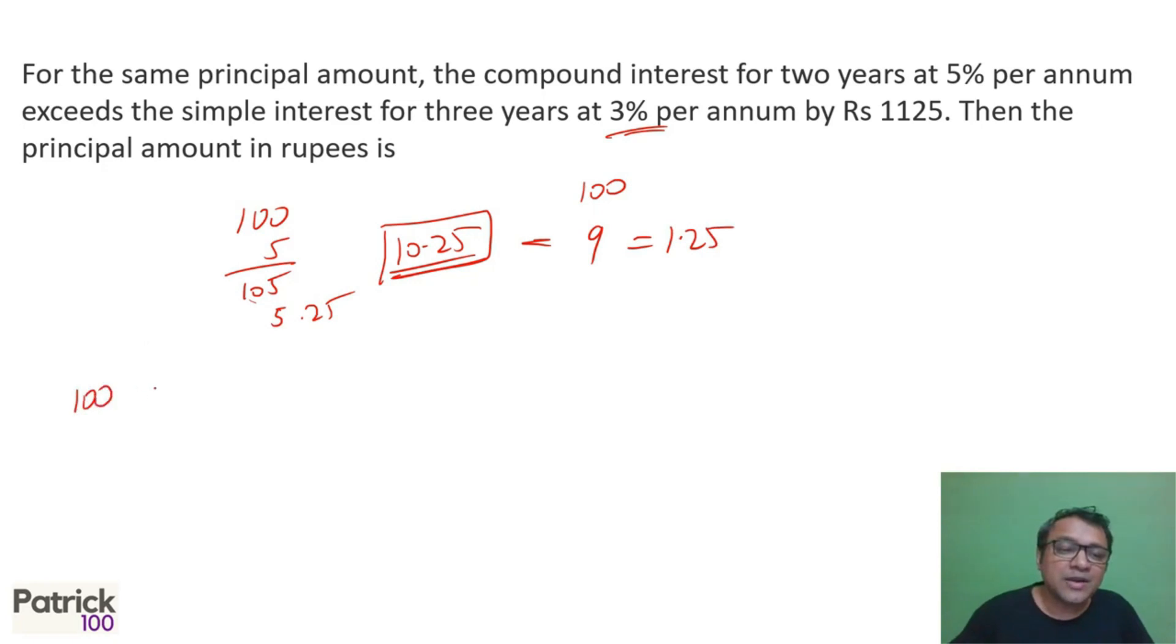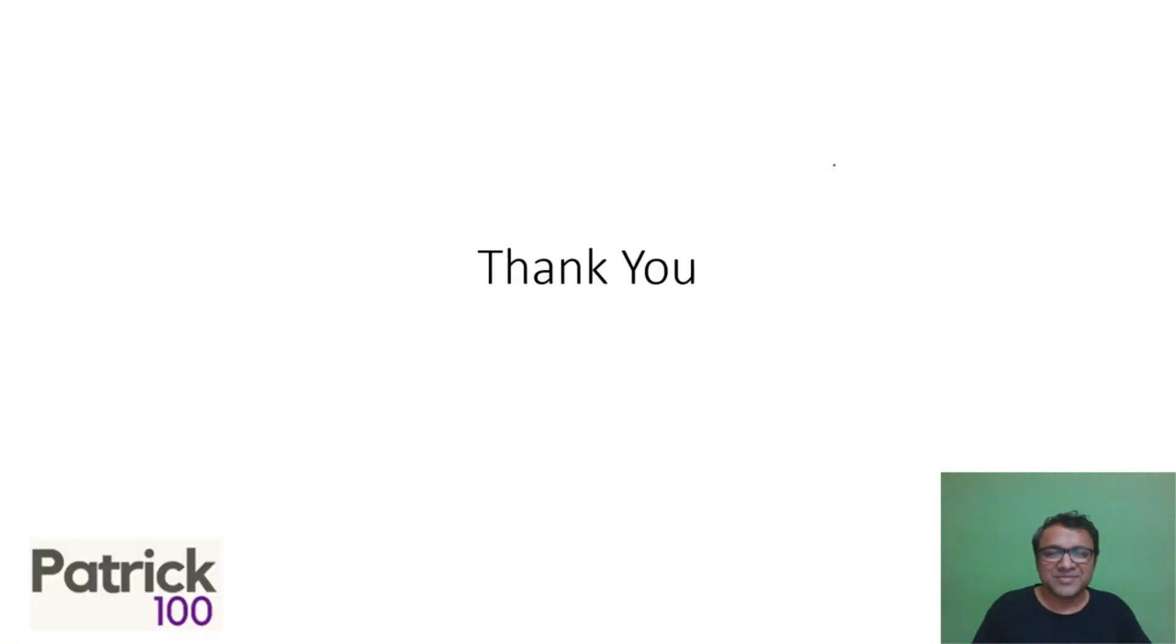So difference in the interest is 1.25. So when I took principle 100, I got a difference of interest of 1.25 to get a difference of 1.125. How much is the value? If you look at this is 900 times, 125 into 8 is 1000 into 9 is 11.25. So if I have 11.25, 900 times it's multiplied. So this if I multiply by 900 times, you will get 90,000. That will be the answer for this. Thank you.